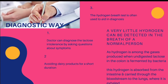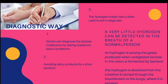The hydrogen breath test works because undigested lactose in the colon undergoes fermentation, which produces gases including hydrogen. This hydrogen is absorbed from the intestine, carried through the bloodstream and venous system to the lungs, and exhaled. You can therefore detect elevated hydrogen in the patient's exhaled breath.